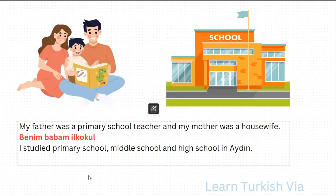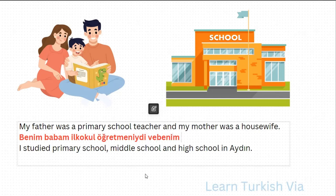Primary school teacher — teacher is öğretmen. Primary school is a noun, teacher is another noun, so this is a compound noun, that's why I need the suffix at the end: ilk okul öğretmeni. Was primary school teacher — öğretmeniydi, and I need a buffer letter here. And — ve. My mother — my: benim, mother: anne, my mother: annem. Was a housewife — housewife: house is ev, housewife: ev hanımı.